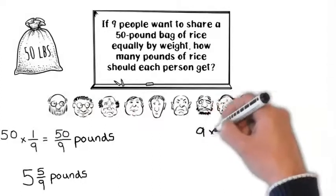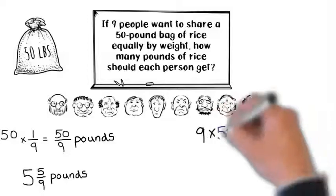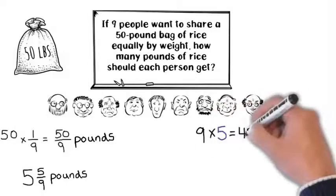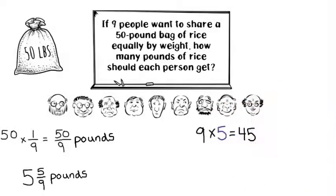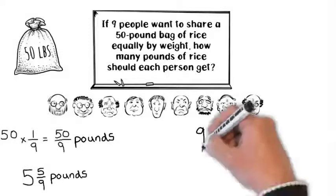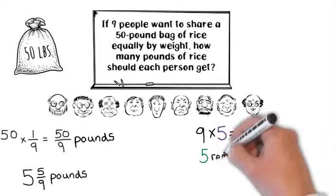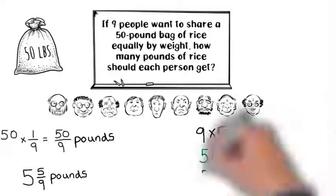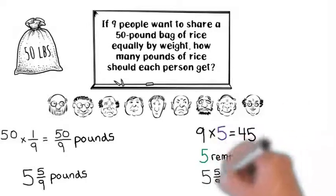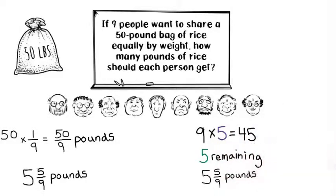Second, they might use the equation 9 times 5, which equals 45, to see that each person can be given 5 pounds, with 5 pounds remaining. Partitioning the remainder gives 5 and 5 ninths pounds for each person.